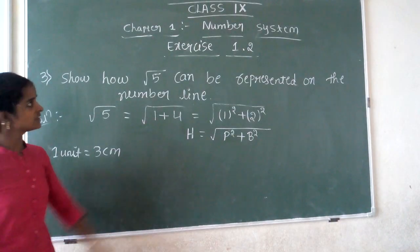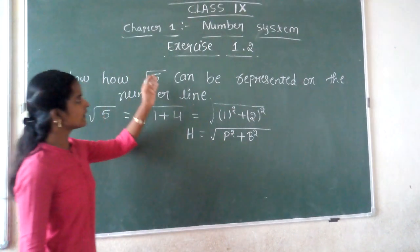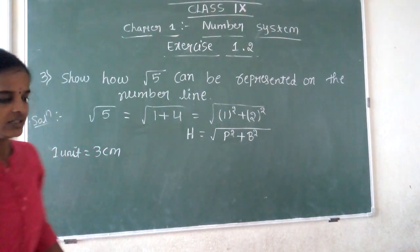Next, we'll explain Exercise 1.2, third question: Show how √5 can be represented on the number line.